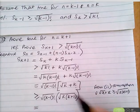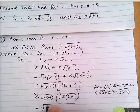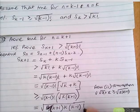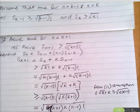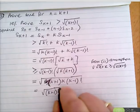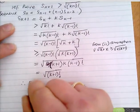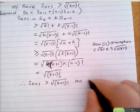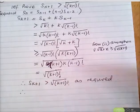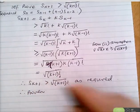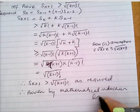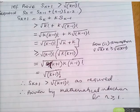Combining under one square root: √((k−1)! · k · (k+1)) = √((k+1)!). Therefore S_{k+1} ≥ √((k+1)!) as required. Therefore proven by mathematical induction for n ≥ 1. That's the end of the examples on recurrence relations.